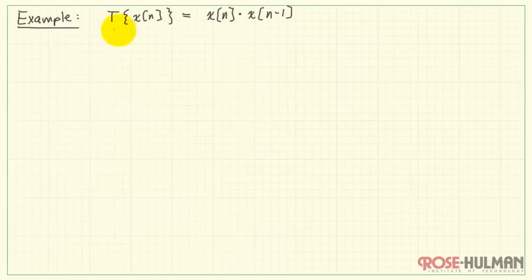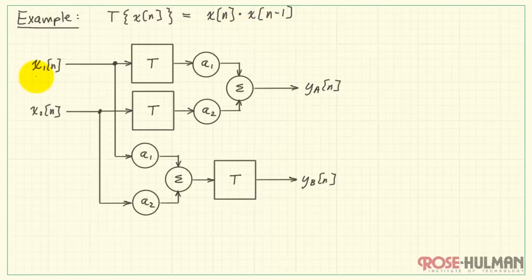Let's try a second example. Here the system is the current input x times the previous input. Put down our structure here. Here we flow x1 and x2 through each instance of a system T.